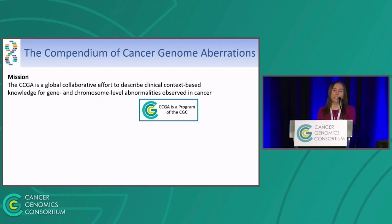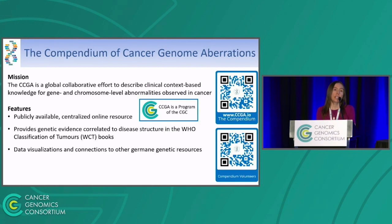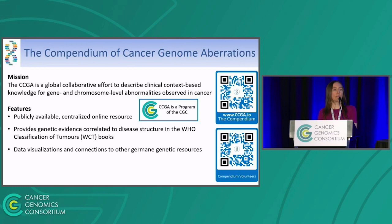It's a collaborative effort to describe chromosome and gene-level abnormalities in cancer in a clinical context — what's clinically relevant — because the idea is to use this for our clinical reporting. It's publicly available, a free online resource. You can find it at CCGA.io, and the idea is to act as a centralized hub of information.